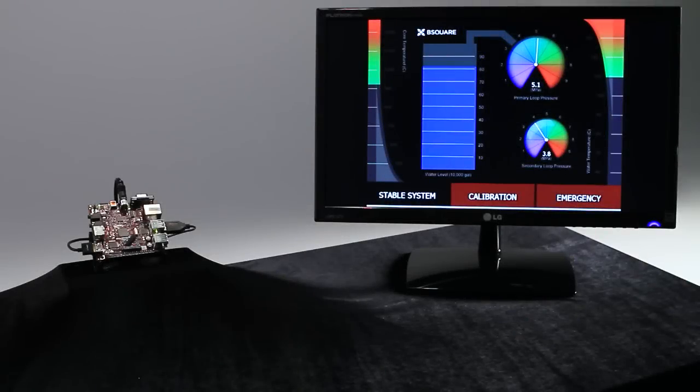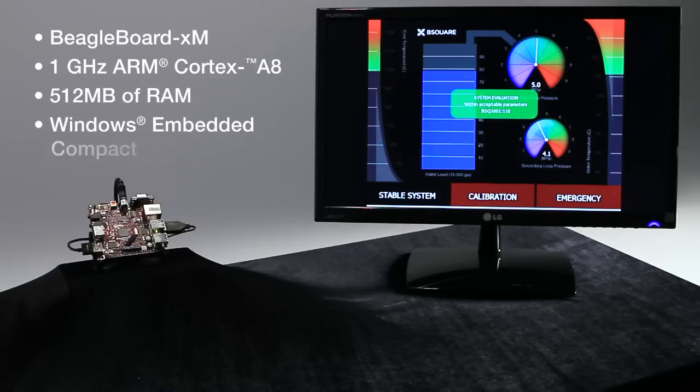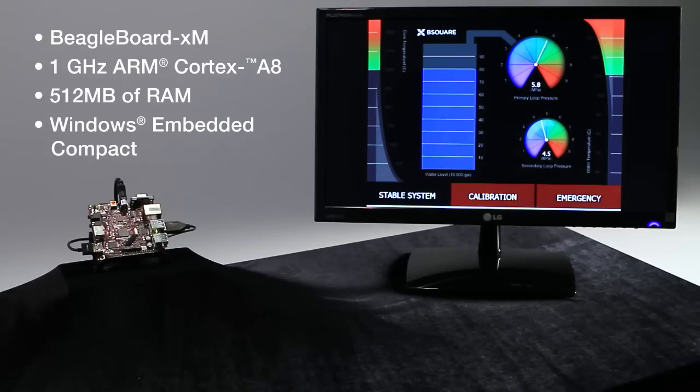We are looking at a simulation of a user interface panel for an industrial automation solution. It is running on hardware typical of many embedded systems. It is important to note that we are not running this demo on a PC. We are running directly on a BeagleBoard XM, running a 1GHz ARM Cortex-A8 core with 512 MB of RAM. It is running the Windows Embedded Compact Operating System.